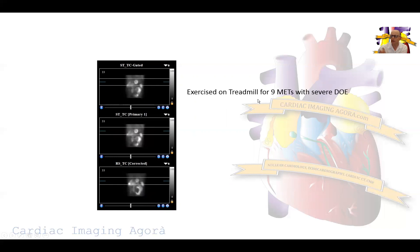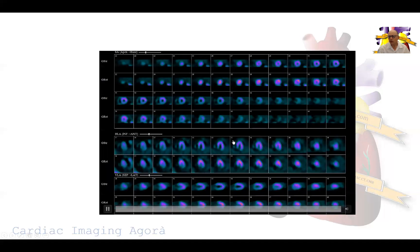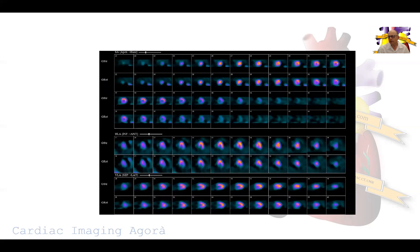The patient during the stress test went up to nine METs with severe shortness of breath. These are the perfusion images — this is SPECT, not PET. You have the rest images on the bottom and the stress images on top. You can see the heart at rest and stress, with some motion artifact — almost an 11 o'clock and 5 o'clock artifact on rest images not present on stress. In general, the perfusion images look quite okay. On the gated images, you can see normal motion and normal function of the left ventricle; even the right ventricle appears normal.